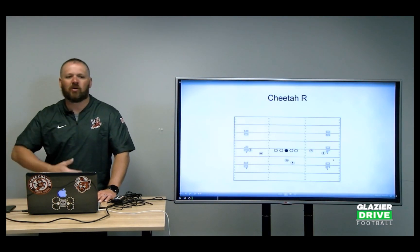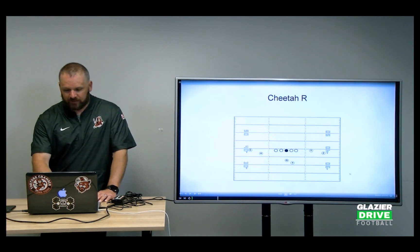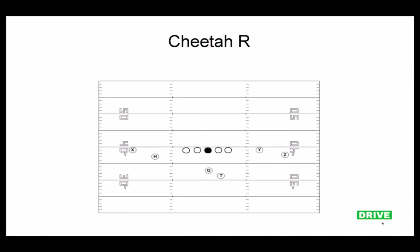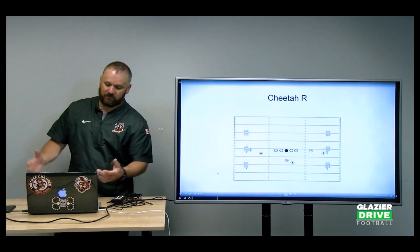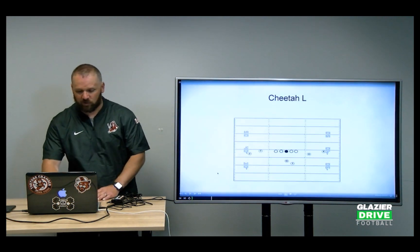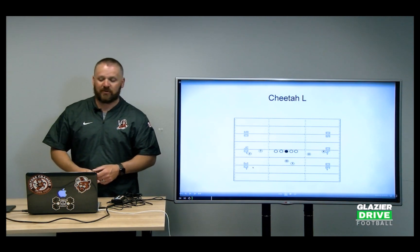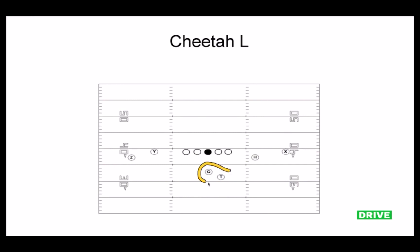Here are some examples of Cheetah. This is Cheetah Right. The kids lift the right arm and they know to line up on the right. The key is that in all our personnel groupings, the Y and the Z travel together. So if I say R, the Y and Z know they're to the right, and the X and H know they're to the left. I don't have to say anything else to get them lined up. This is Cheetah Right, and then you have Cheetah Left — the Y and Z go to the left, the H and X are opposite. The back aligns to whatever the play call or protection dictates.